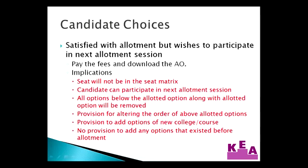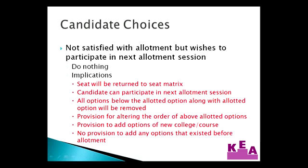The candidate becomes bound to take admission for that seat if he or she is not allotted a better seat in further allotments. If a candidate is not satisfied with the allotment but wishes to participate in the next allotment session, then he or she need not do anything. The implications are: the allotment will be cancelled and the seat will be returned to the seat matrix; the candidate can participate in the next allotment session; all options below the allotted option along with the allotted option will be removed; and the provision for altering the order of above-allotted options and adding options of new college or course will be provided.